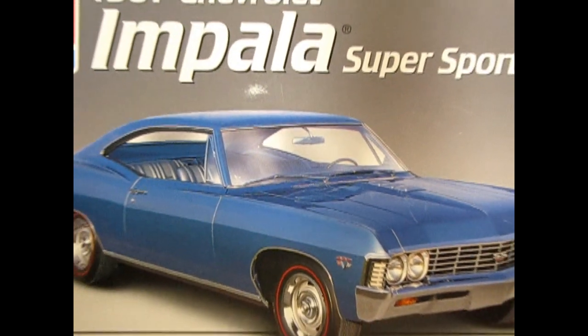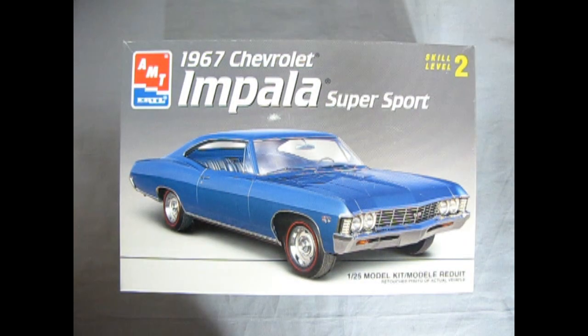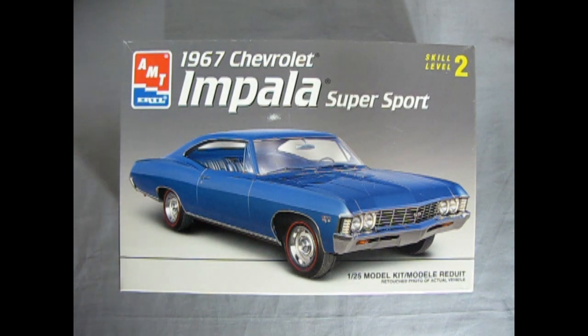A major restyle gave 1967 full-size Chevrolets an artful blend of creases, bulges and curves. Interiors were more luxurious than ever and roomier too thanks to new swept back instrument panel that opened up extra leg and knee room in front. Engine options ranged up to a new 427 V8 with stout 385 horsepower and that is exactly what AMT Ertl gives us in this amazing 1967 Chevrolet Impala Super Sport model kit.